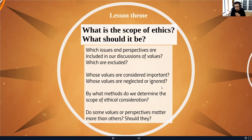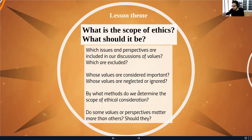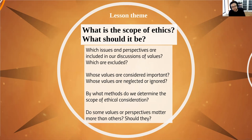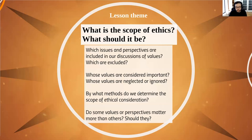Whether within a company, for an individual, or for a culture or society — how wide, how broad is the scope of ethical consideration going to be? What methods do we use to determine the scope of ethical consideration? What procedures do we have in place for deciding that the ethical standards have been met? Do some perspectives matter more than others when we're weighing all the values at stake in some engineering project? Do some values matter more? Does the boss's view matter more? Does the public interest matter more? And how do we decide these things? These are all the kinds of questions that fall under this general theme of the scope of ethical consideration.